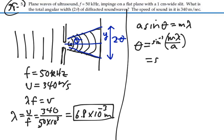So that's going to be inverse sine of, and we're looking for the first minimum on either side. 6.8 times 10 to the minus 3 for our wavelength over, and we have a 1 centimeter wide slit. So that's going to be 0.01 meters for that. So what is that? In degrees, it's 42.84 degrees.